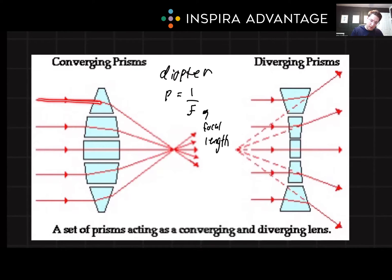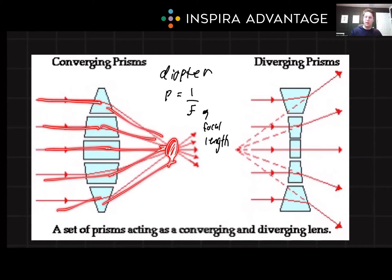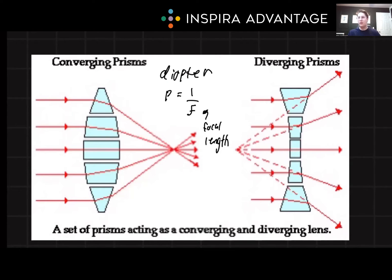Think of like a magnifying glass out in the sun. You can make a point of light at the bottom on that concrete. From a medical standpoint, they're used to correct farsightedness.